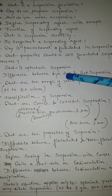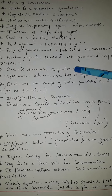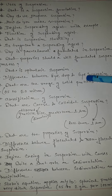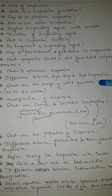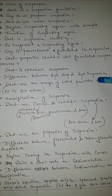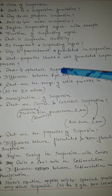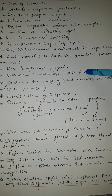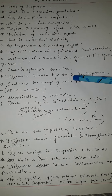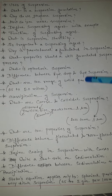Difference between eye drop and eye suspension: Eye drop is one type of monophasic liquid dosage form. Suspension is one type of biphasic liquid dosage form. The difference is in the dosage form — both are ophthalmic, but the difference is dosage form.